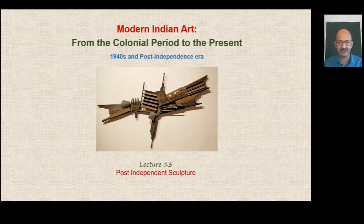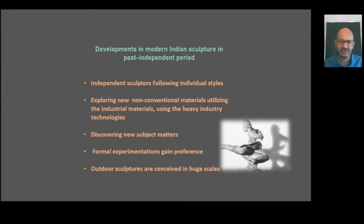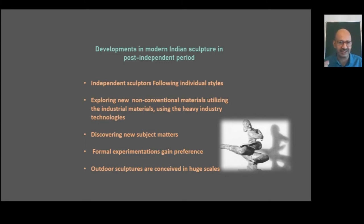Let us look at some of these points before we begin to look at the works by individual artists. The developments in modern Indian sculpture in the post-independent period can be understood through several markers. All of these independent sculptors followed individual styles instead of following preset or preconceived norms. Therefore, they began to explore new, non-conventional materials, utilizing industrial materials and heavy industry technologies.